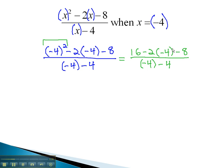Next, order of operation asks us to do any multiplication. This will give us 16, plus 8, minus 8, over negative 4, minus 4.